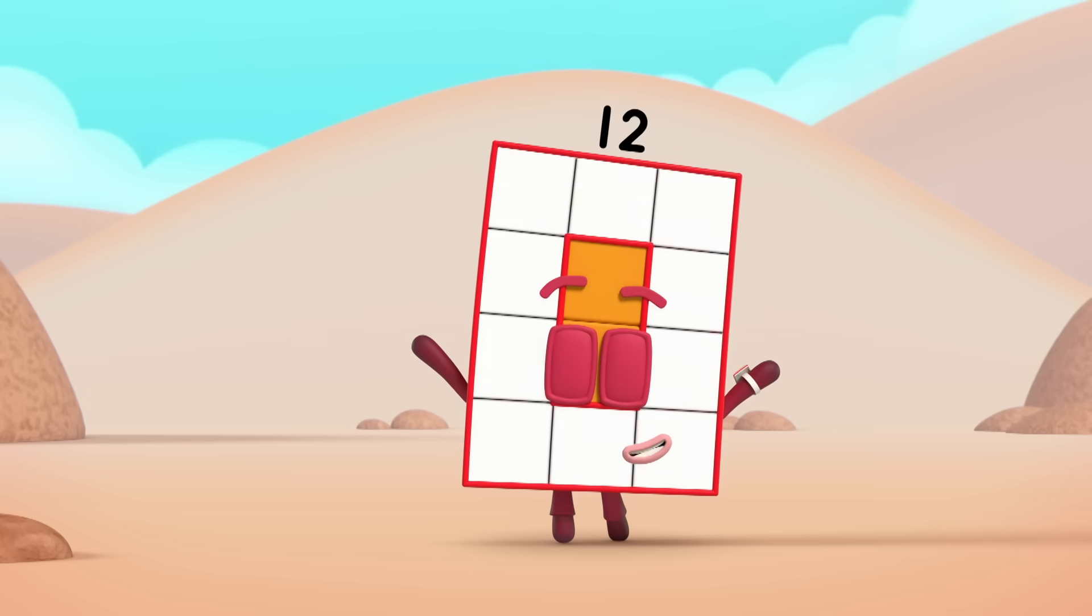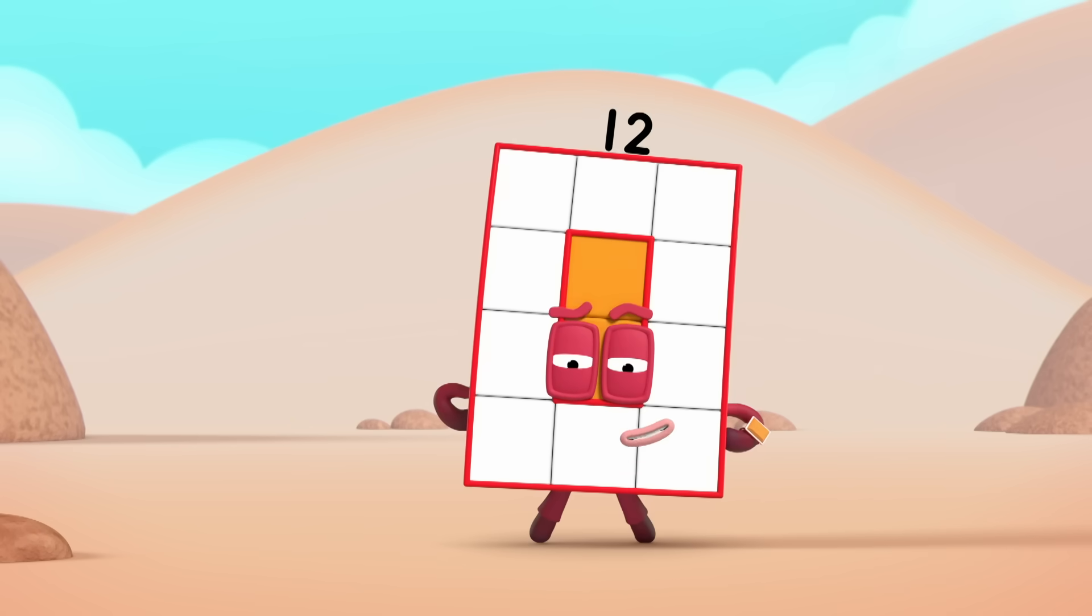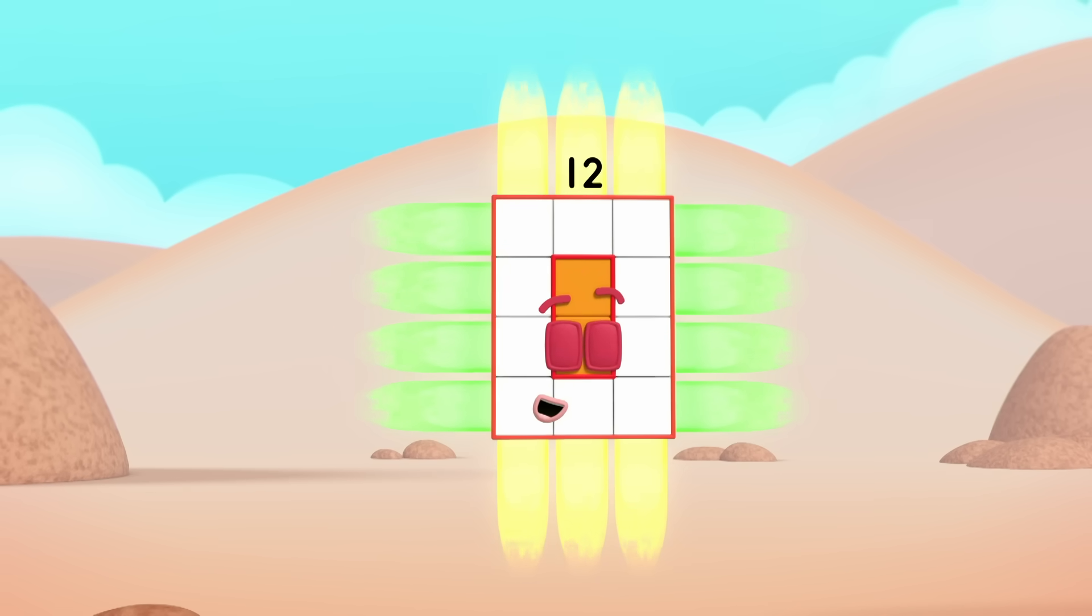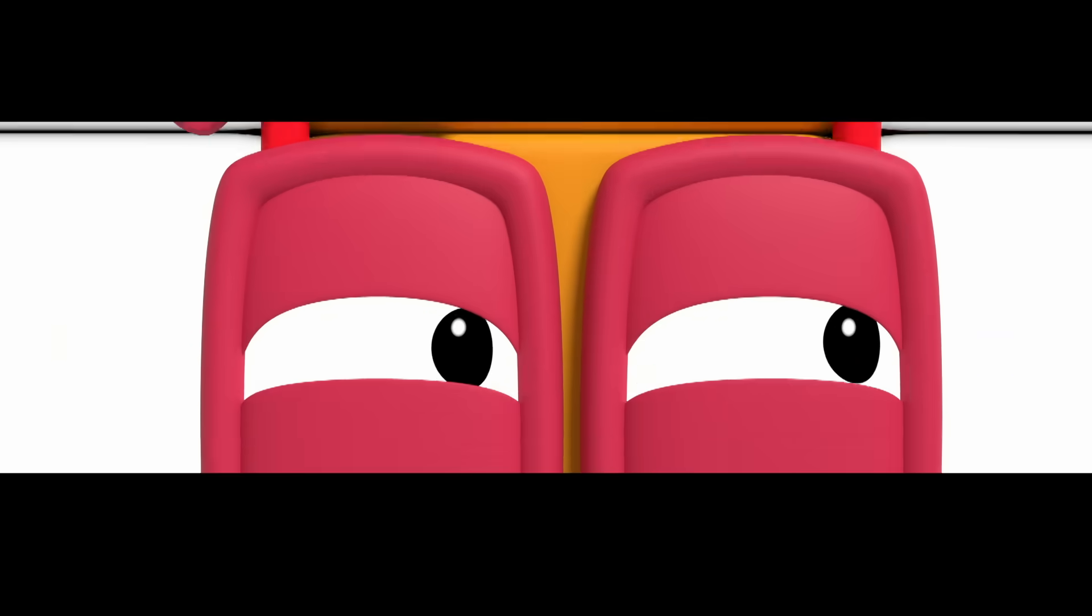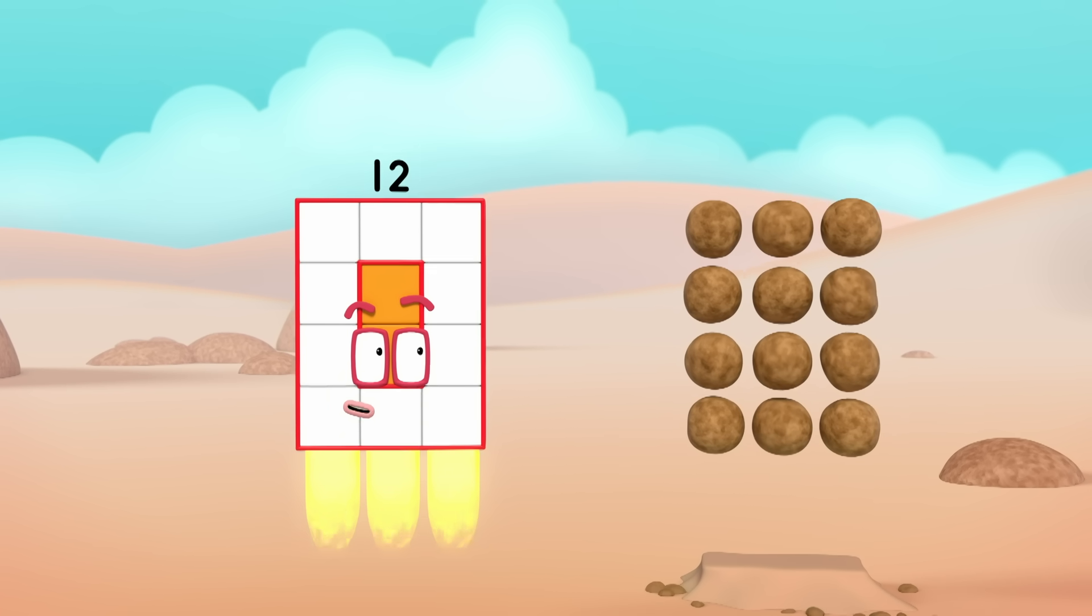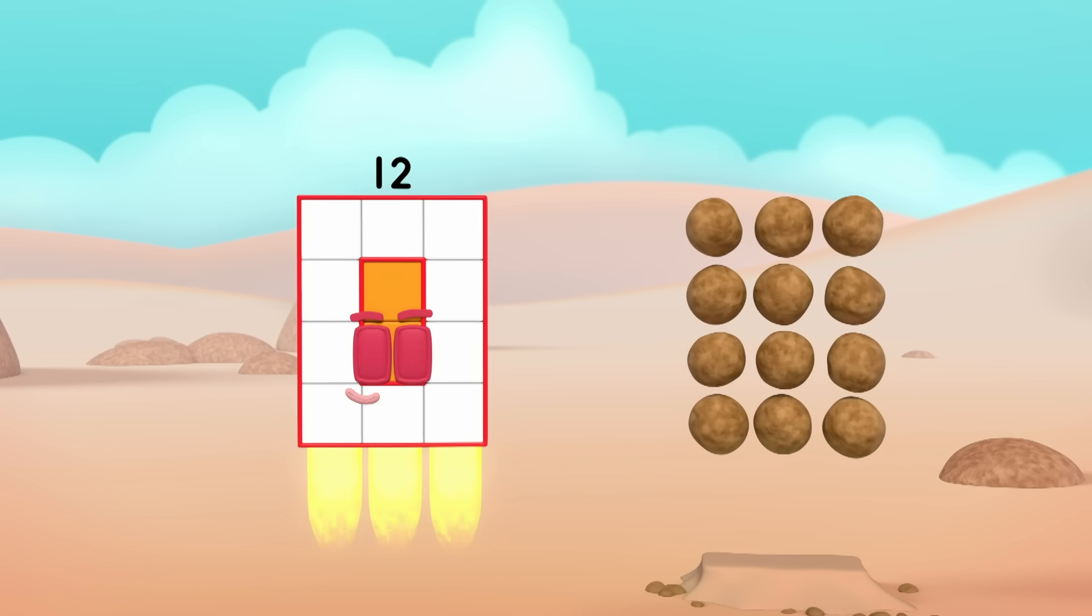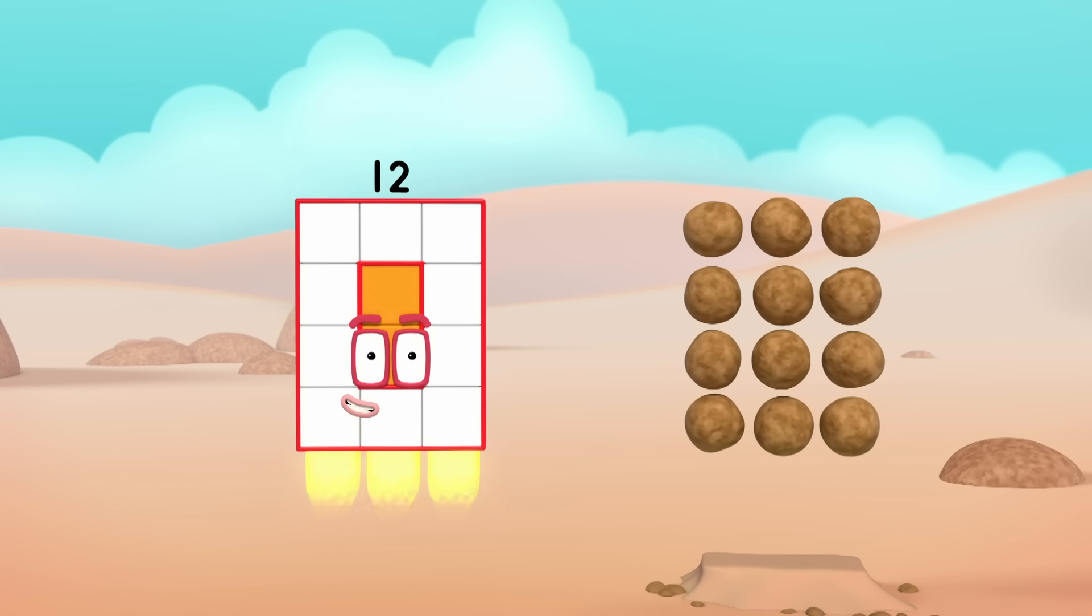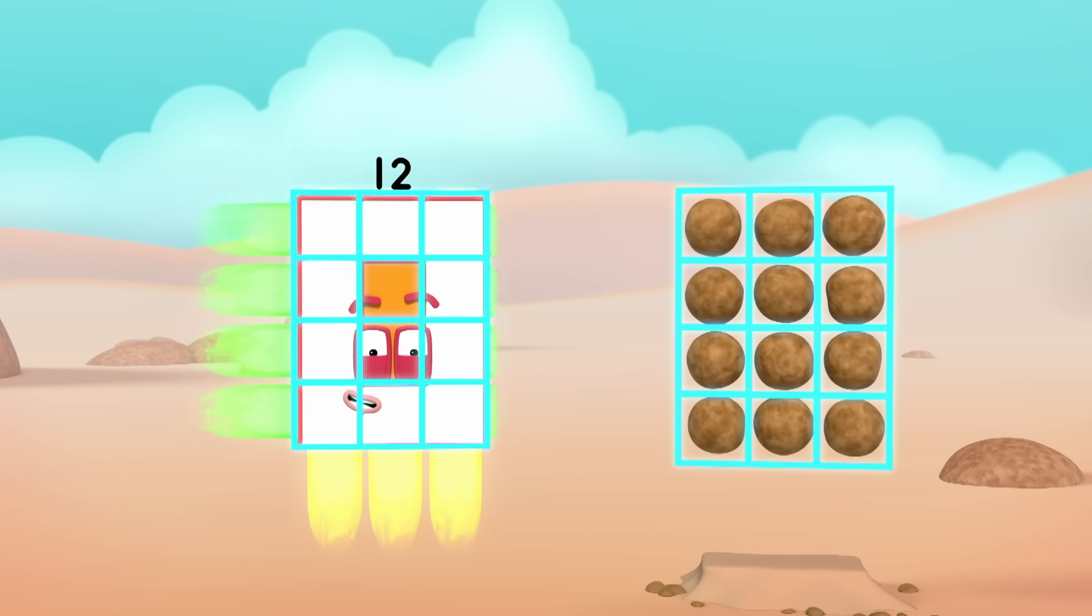Yes, I am 12, and I am a super rectangle! The rocks are in columns and rows. My blocks are in columns and rows. And that's called an array. Hooray! Hey!